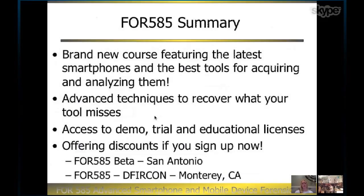Small summary: this is a brand new course focusing on the latest and greatest smartphones. Advanced techniques cover what the tools miss — vendors will listen and fix things, so it'll be cat and mouse constantly. Lots of free demos and trial licenses, plus an actual educational license from Oxygen that does not expire. There are $500 discounts for the beta. The first beta, week before Thanksgiving, is sold out. Paul Henry is teaching the second one in San Antonio. The Monterey class in March 2014 is also upcoming.